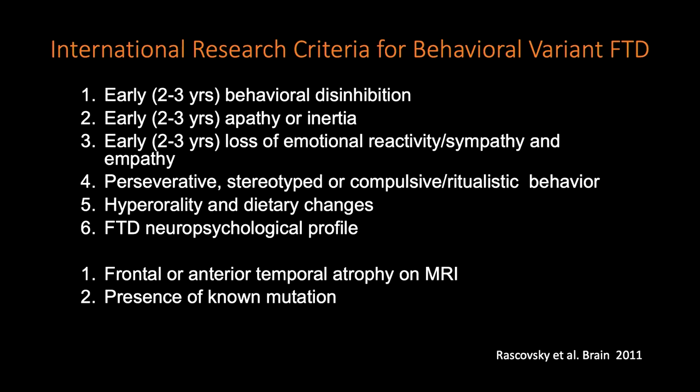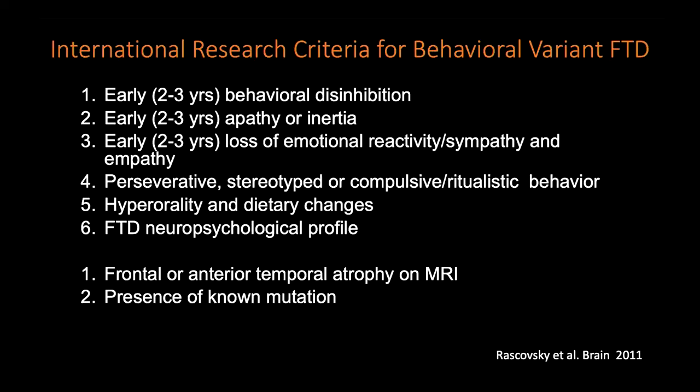In behavioral variant FTD, patients manifest very prototypical early symptoms; a diagnosis requires at least three of the first six criteria. Patients often present with profound disinhibition — profoundly inappropriate behavior, totally unable to comply with standard rules of social conduct. They may alternatively present with profound apathy or inertia, losing all interest and initiative — people who were very socially engaged and productive suddenly find all their interests completely fading away. Getting up, going to work, paying bills, interacting with family — all of a sudden become unimportant.